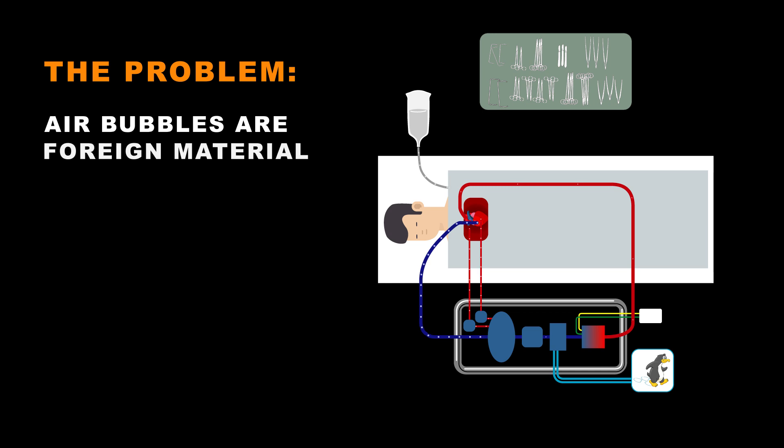Air is introduced into blood by suckers, vents, the open chambers of the heart, temperature changes, the air blood interface in an open reservoir, and syringes and IV lines are obvious sources of air introduction.